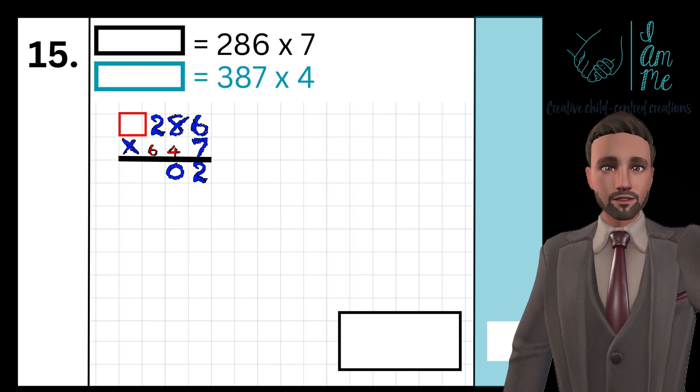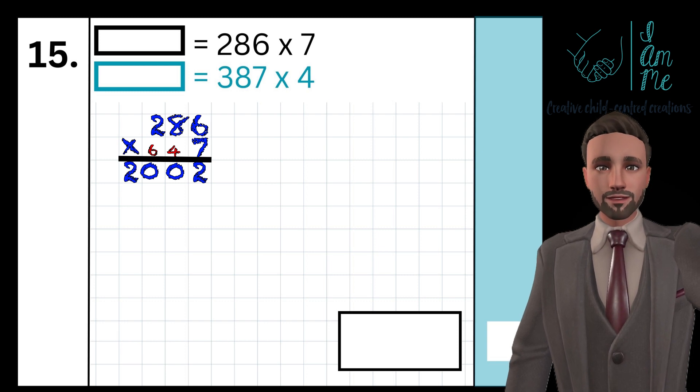There is nothing in the next column, so I don't need to carry the 2 above the line. I can simply put it beneath the line, giving an answer of 2002.